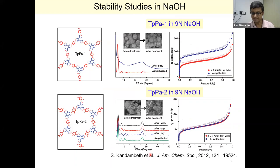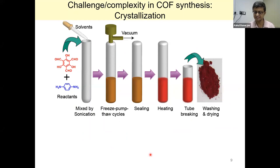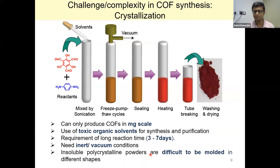I have seen multiple publications on this keto-enamine theme by diverse groups all over the world, which gives us a lot of pleasure and satisfaction. The drawback of the synthesis of this covalent organic framework is if you need to make it in bulk — when I talk about bulk, I mean about half a kilogram. The method we commonly use in our lab, the freeze-pump-thaw cycle, gives you only milligram-scale compound. They are also difficult to mold, requiring very inert, high-vacuum conditions, flame sealing, and breaking the seal.